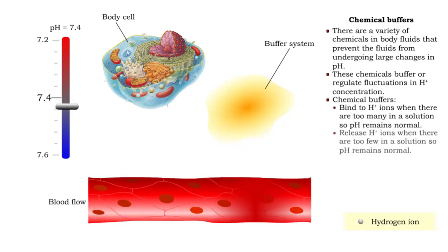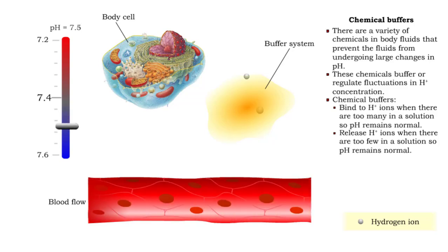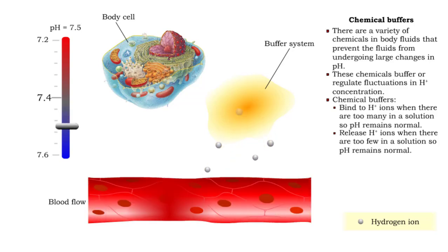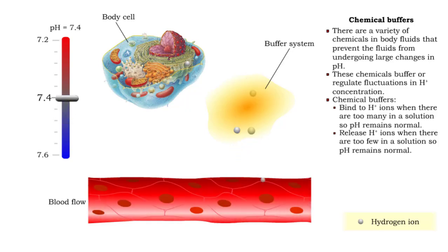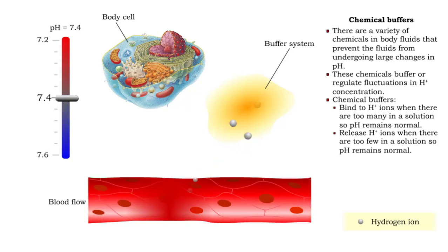When hydrogen ion concentration decreases, chemical buffers are able to release hydrogen ions into the fluid. This prevents the pH of the fluid from going up.